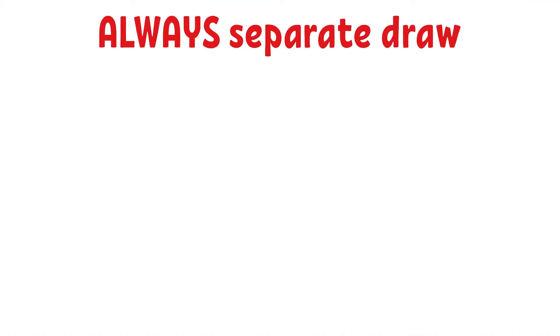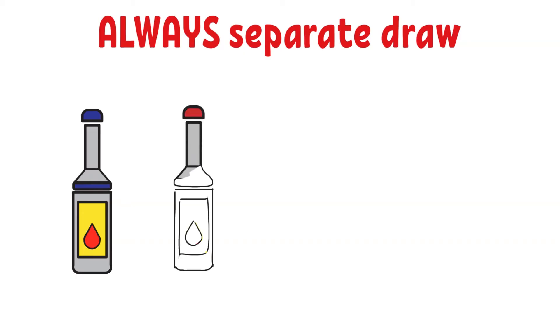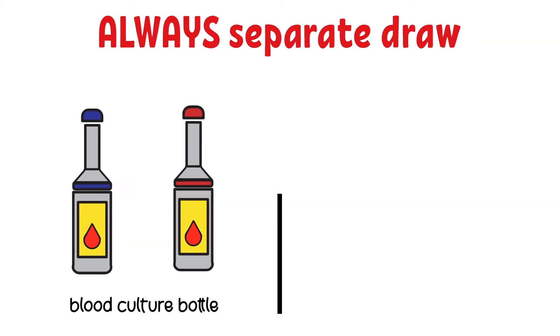A separate venipuncture for trace metal analysis must be performed if blood cultures are ordered at the same time. If the patient had an order for both blood draw, trace metal analysis and blood culture, the phlebotomist should have two separate draws because both blood culture and the royal blue top tube must be the first tube.